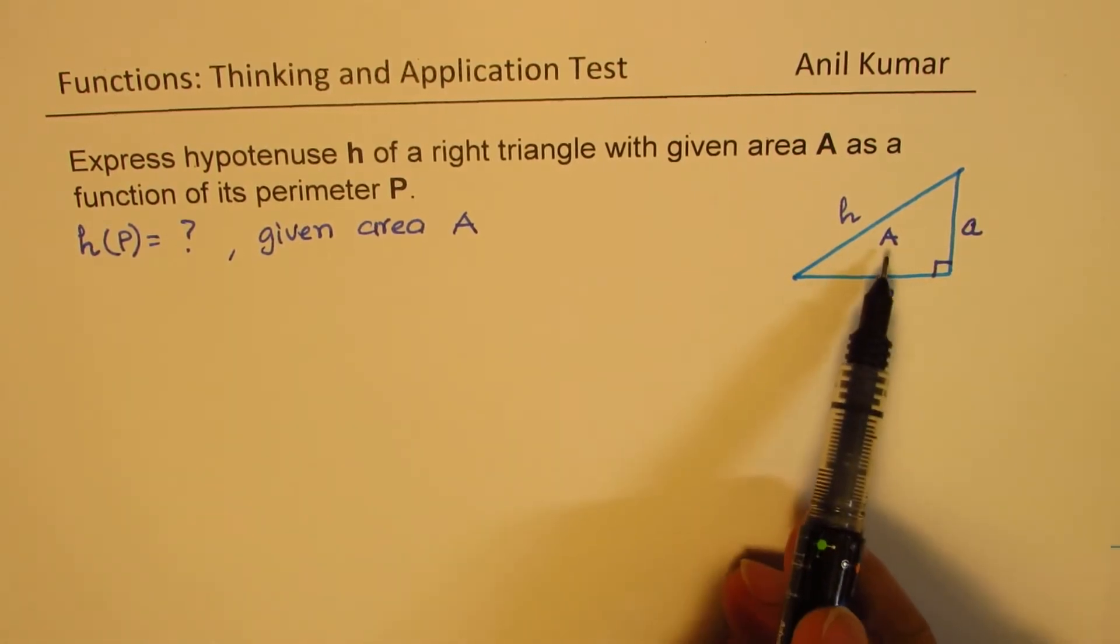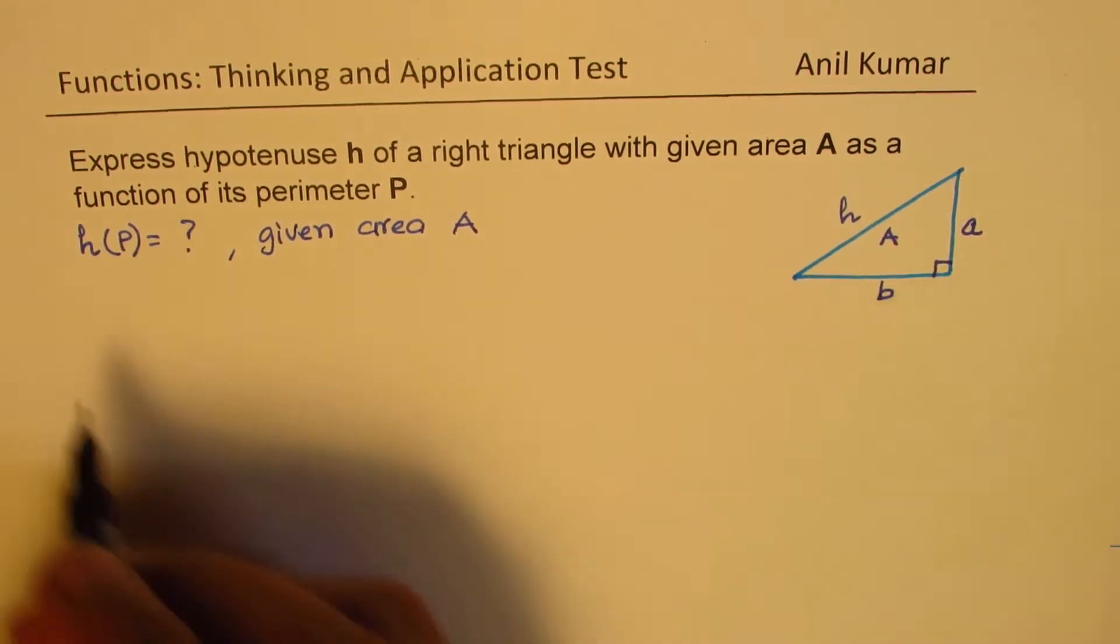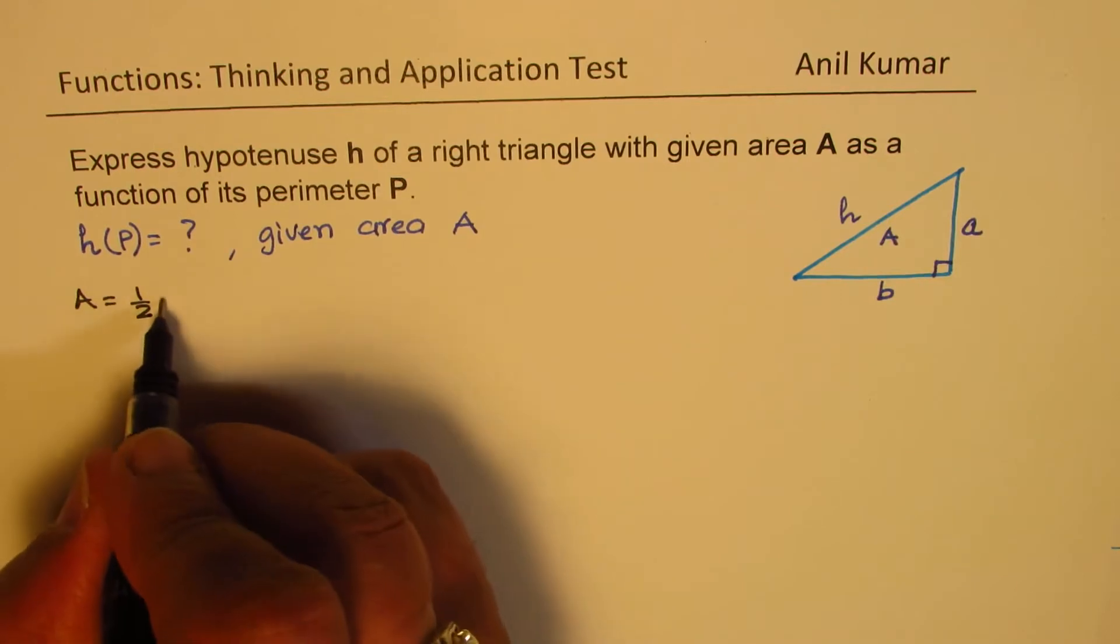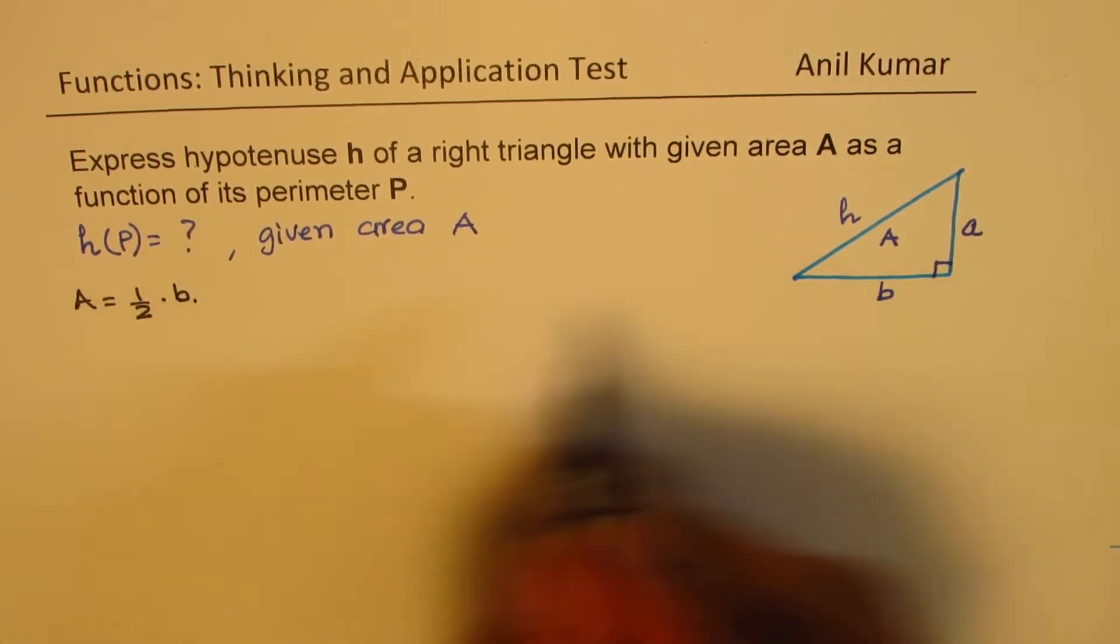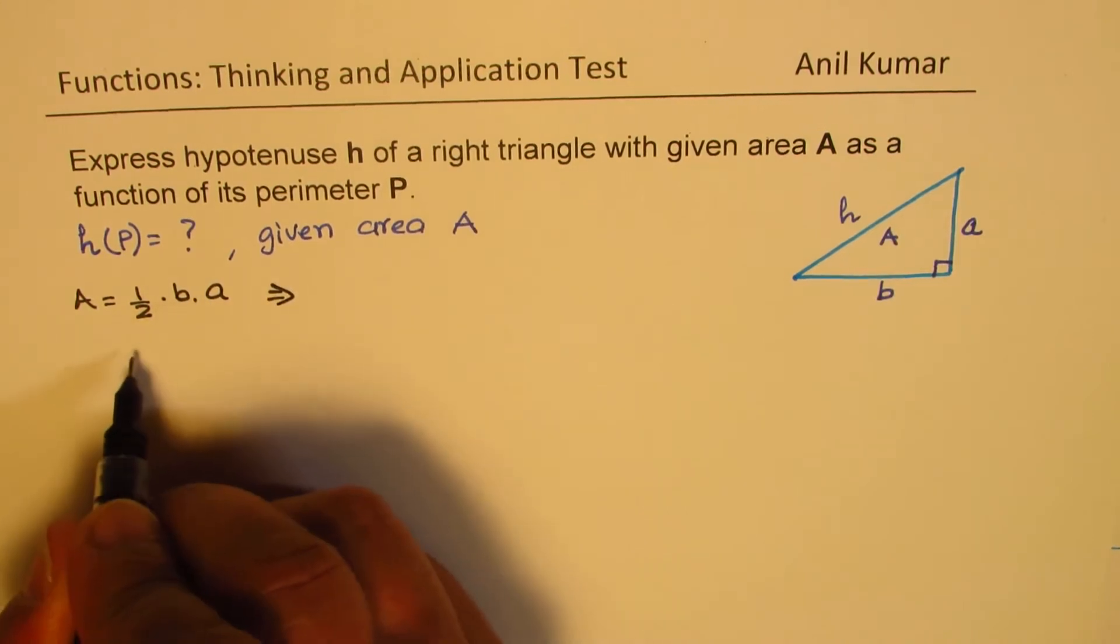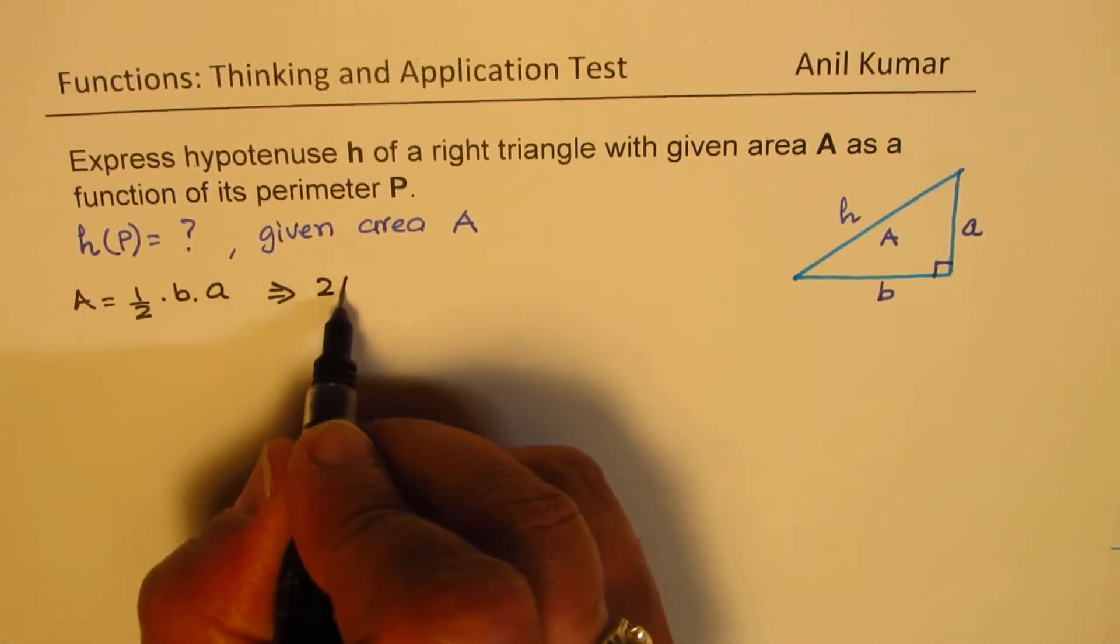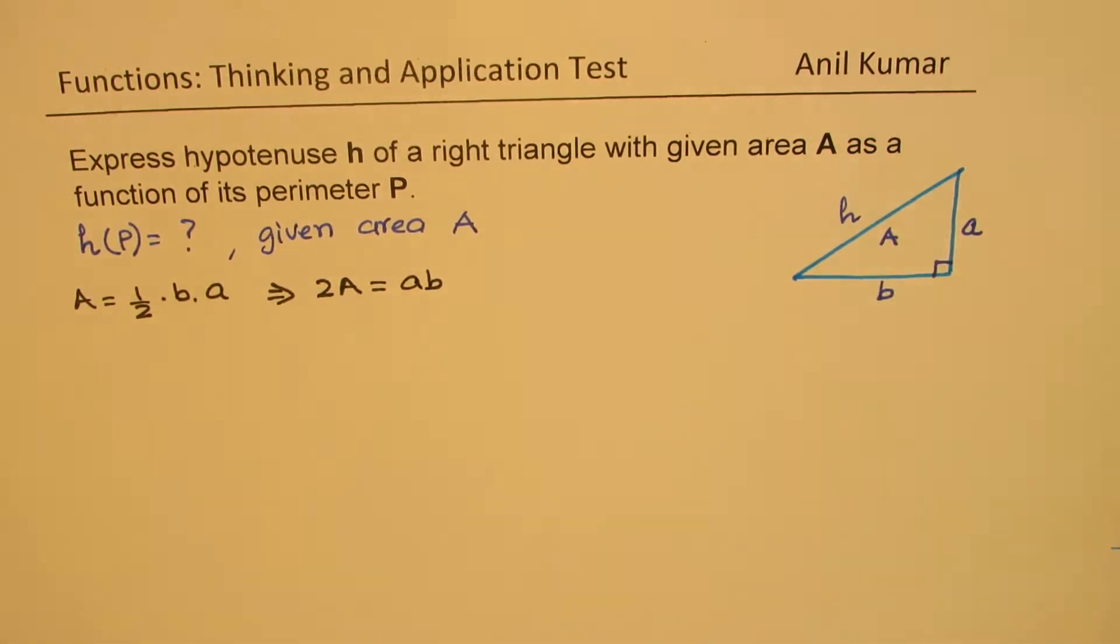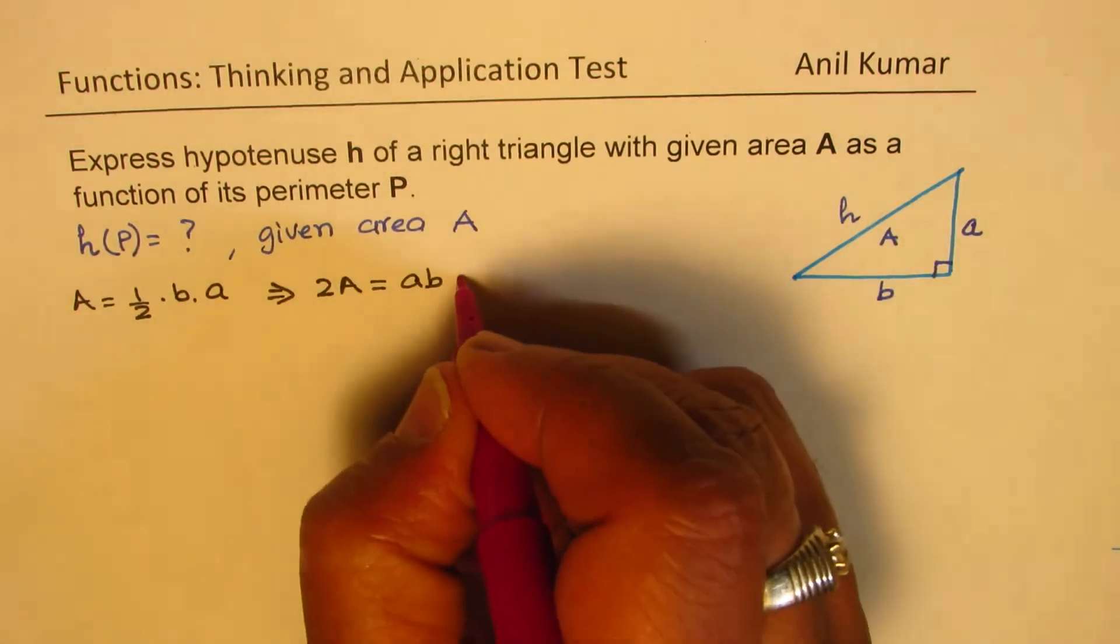To begin with, since we are given the area of a right triangle, area equals half of base times height, which is A. So that gives us the value of ab is 2A. So 2A is the product of a and b. That is one equation which we have.